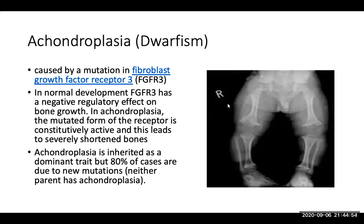Achondroplasia, also known as dwarfism, is caused by a mutation in the FGFR3 gene. In normal development, this gene has a negative regulatory effect on bone growth, but in achondroplasia the mutated form of the receptor is constitutively active, leading to severely shortened bones. It is inherited as a dominant trait, but 80% of cases are actually due to new mutations where neither parent carries the mutation.